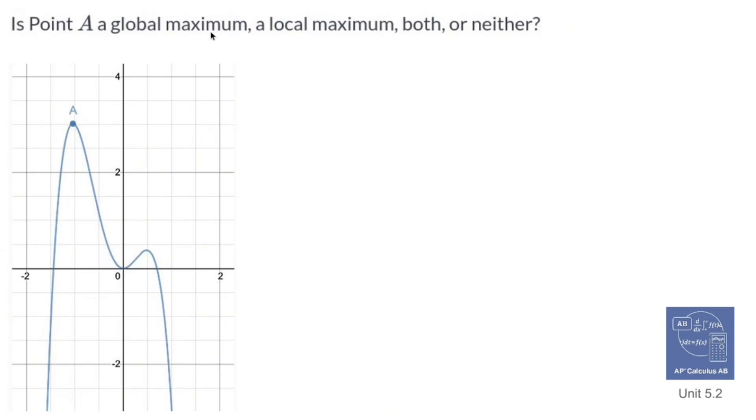Is point A a global maximum, a local maximum, both or neither? By definition, a global maximum is absolutely the very top of a graph. There's nothing greater than it. There's no y value larger than it. And A is definitely going to be a global maximum. This graph seems to be going down to negative infinity on both ends. The end behavior seems to be at negative infinity. So we could say that this is a global maximum for sure. Now, fun fact, anything that's a global maximum is also a local maximum. So it's both.